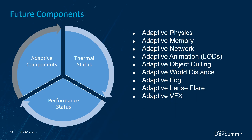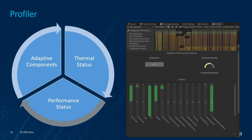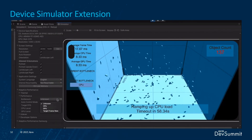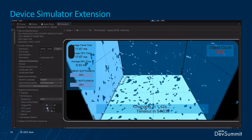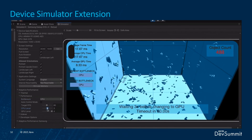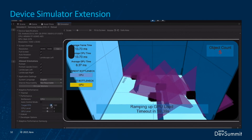There are more components in research at the moment to scale more engine features automatically in future. To verify results, Adaptive Performance comes with profiler integration in Unity 2021.2. It shows runtime information for adaptive performance: CPU and GPU times, frequency levels, bottlenecks, thermal warnings, and the status of each available scaler. Adaptive Performance also provides a device simulator extension, which lets you use all features in the editor without the need to deploy anything to the device, for faster iteration time and prototyping.